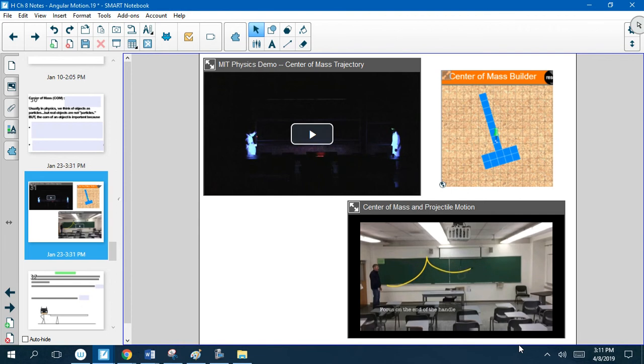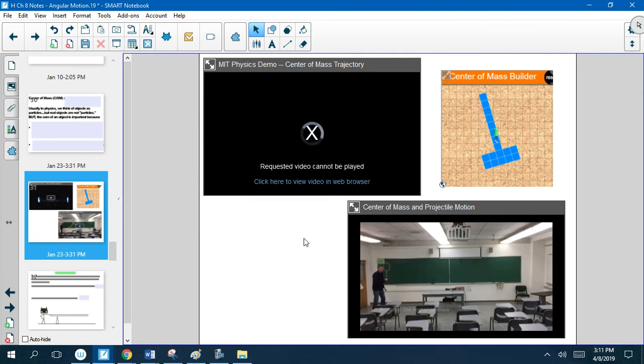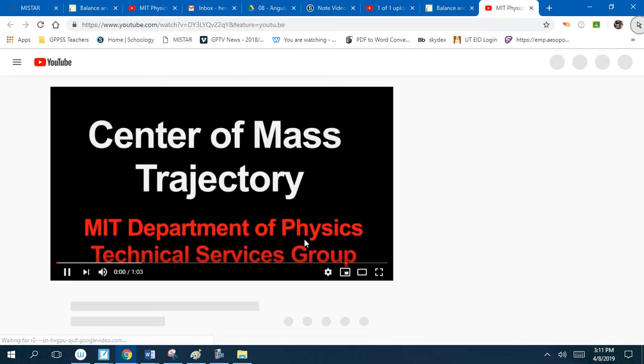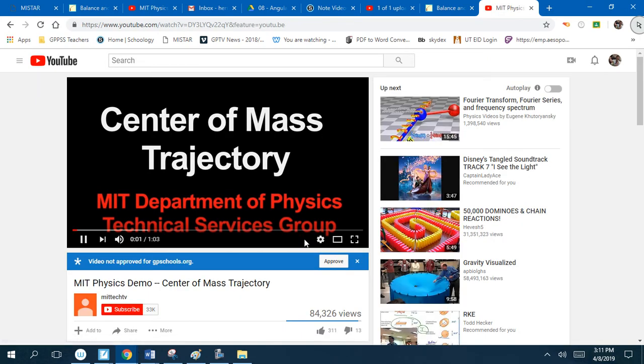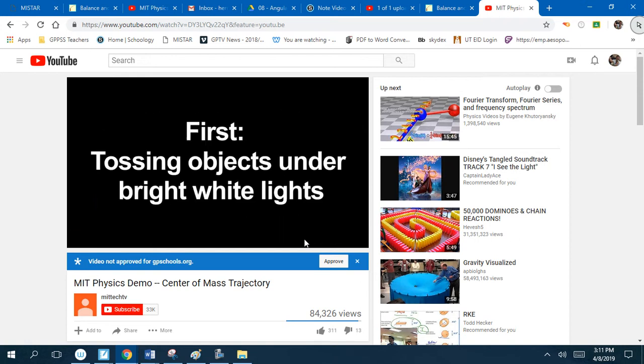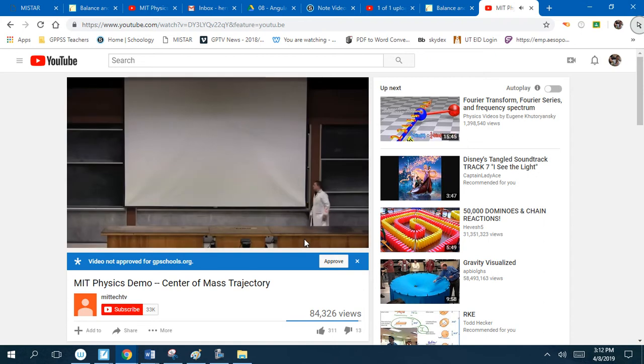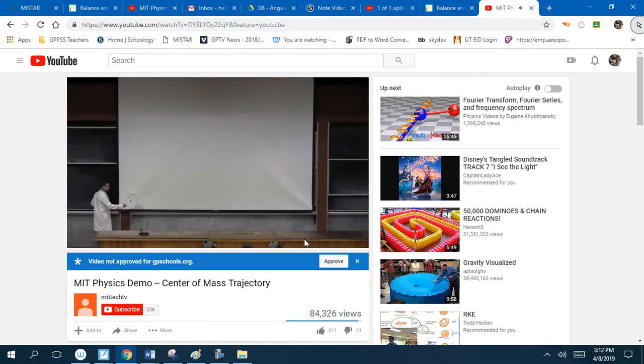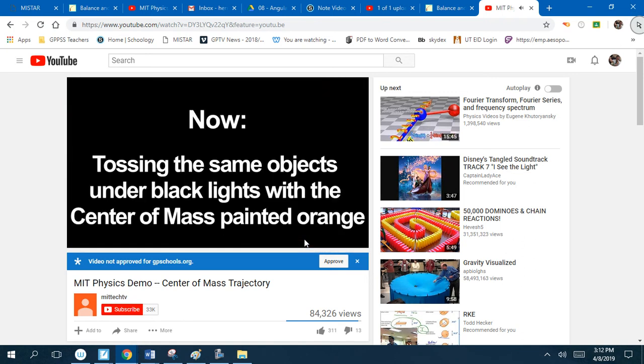This video over here, which doesn't seem like it wants to play there, but we can get it to play over here. This shows something similar. This has a bunch of people from MIT and they're throwing objects in the air, first with just a white screen so you can see what the objects are, and then it shows you the exact same objects but instead they kind of color code the center of mass so that you can see it and they let it glow.